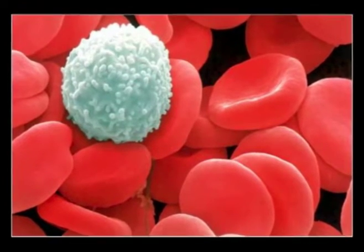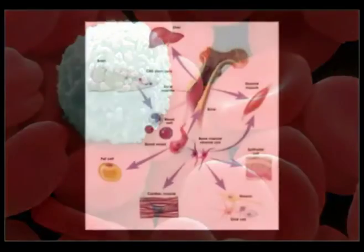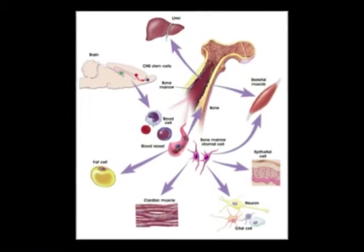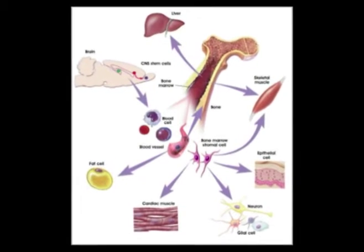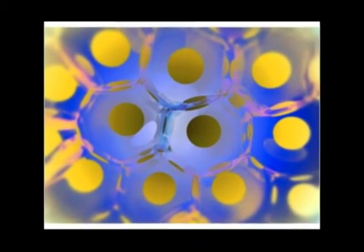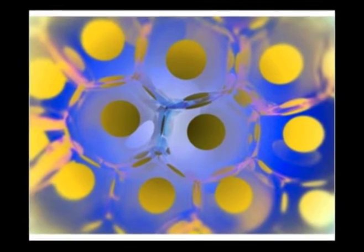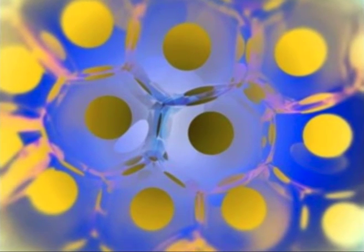White cells, or leukocytes, exist in variable numbers and types but make up a very small part of the blood volume — normally only one percent. Most are produced in our bone marrow from the same kind of stem cells that produce red cells. Some white cells called lymphocytes are a major part of the immune system. Individual white cells usually only last 18 to 36 hours before they are also removed by the system.